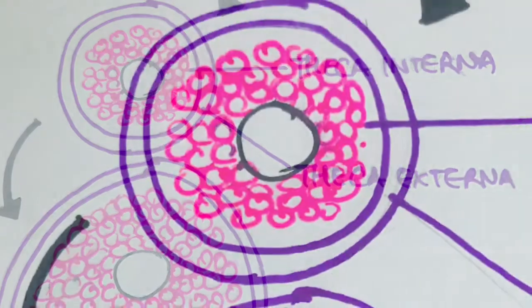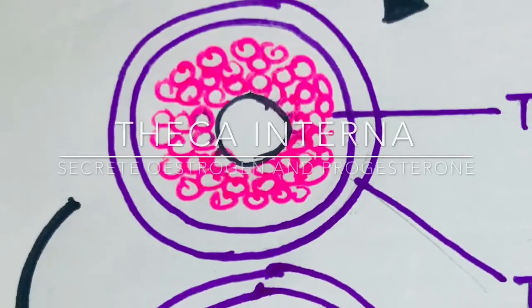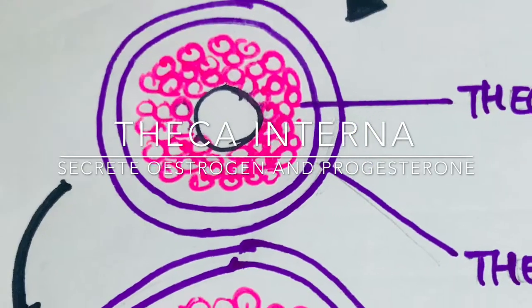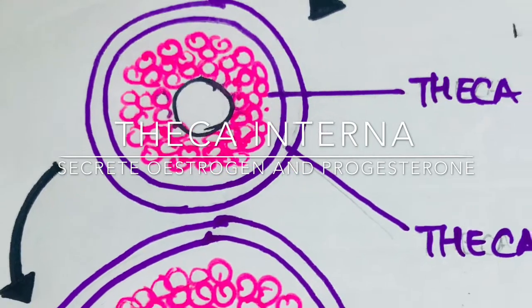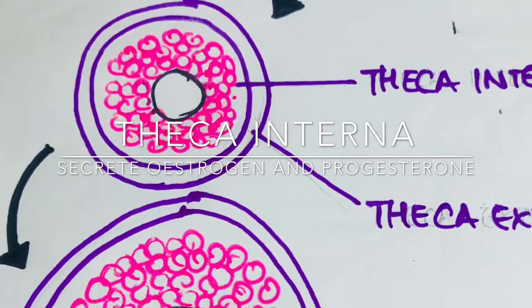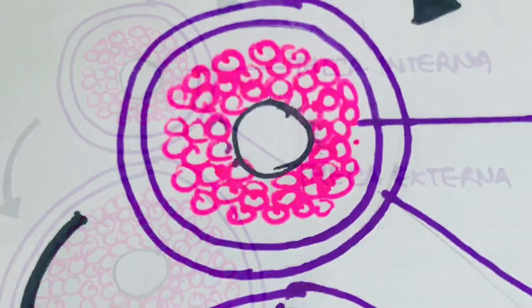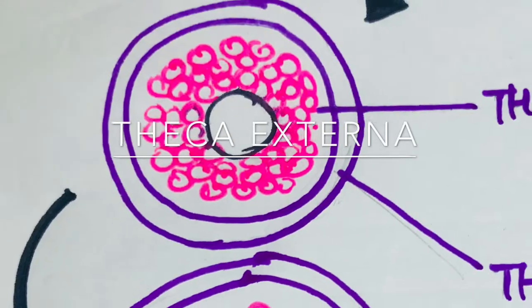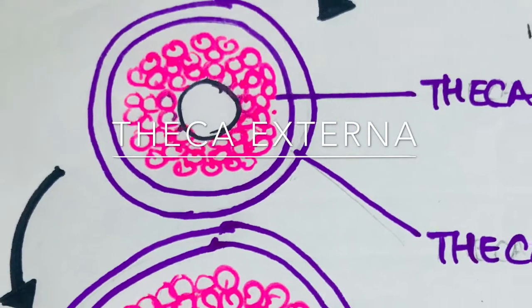The theca interna cells, similar to those of granulosa cells, develop the ability to secrete additional steroid sex hormones, estrogen and progesterone. The outer layer, the theca externa, develops into a highly vascular connective tissue capsule that becomes the capsule of the developing follicle.